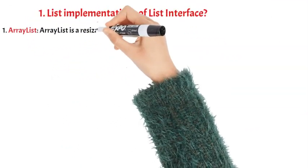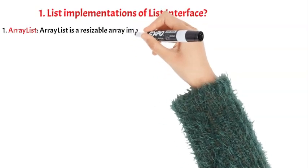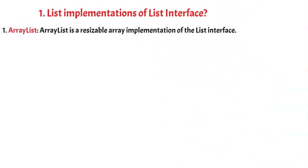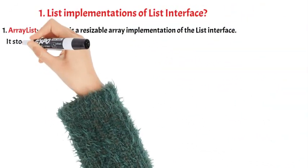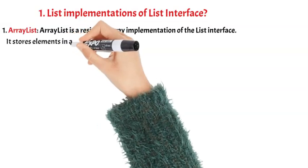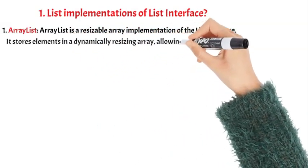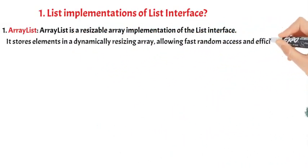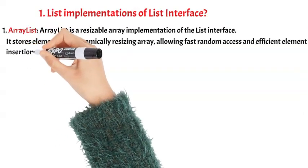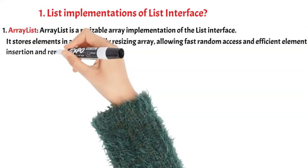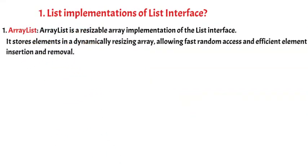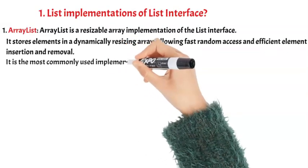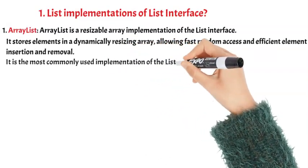ArrayList is a resizable array implementation of the List interface. It stores elements in a dynamically resizing array, allowing fast random access and efficient element insertion and removal. It is the most commonly used implementation of the List interface.